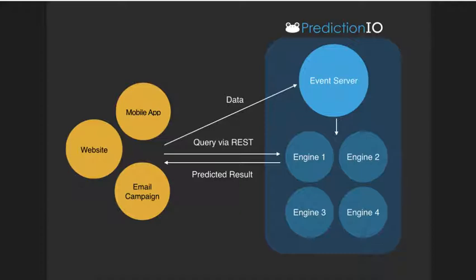This is the same architecture with more applications and more prediction engines. A benefit of Apache Prediction IO is that it's very easy to scale.